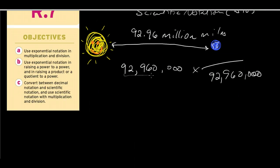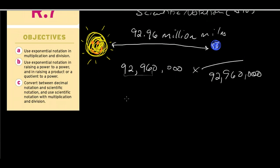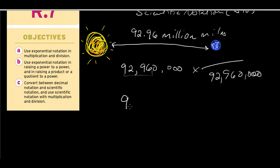They can take really big numbers, like 92,960,000, and they can write them differently so that this part of the number, the significant figures where we're rounding to, is a number that's smaller than 10. It's bigger than 1, but smaller than 10. So let's rewrite this as 9.296.